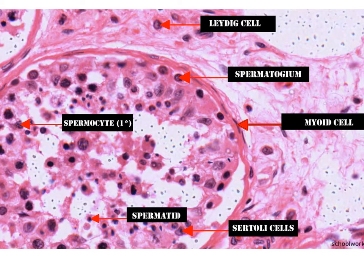Here we can see a histological slide of the actual testis with spermatocytes, spermatids, and the different Sertoli cells. The Sertoli cells are nurse cells that help maintain the environment and protect the developing sperm from the body's immune system. There is also a connective tissue membrane surrounding each area, and in between we have what is called a Leydig cell — a large interstitial cell that produces testosterone.